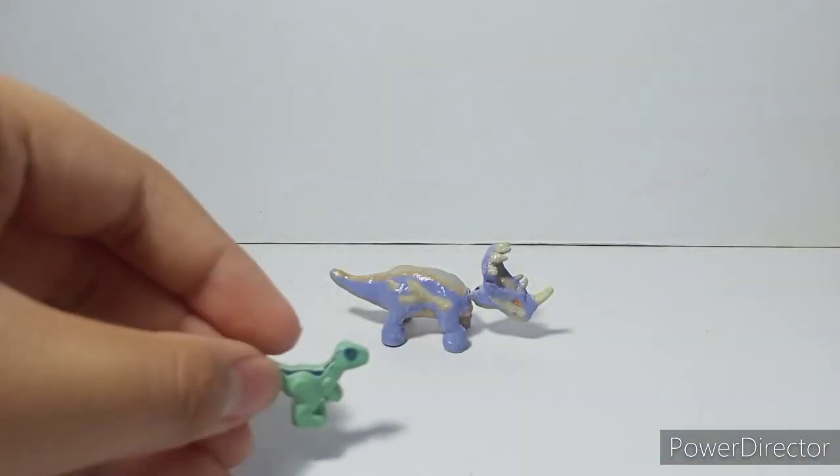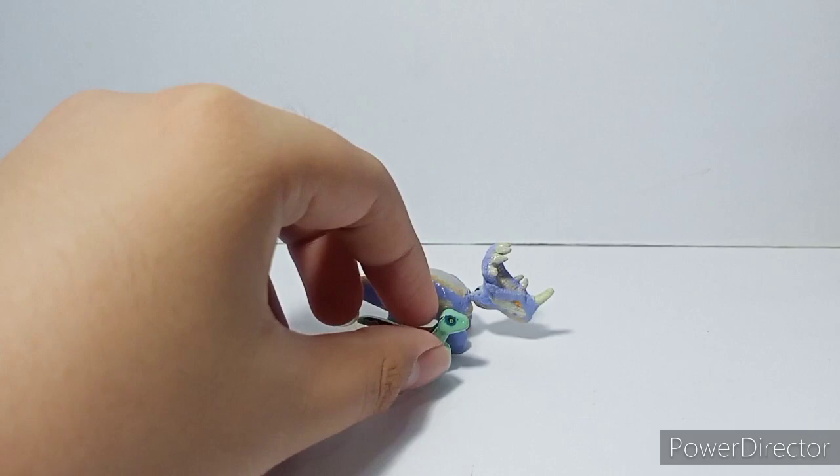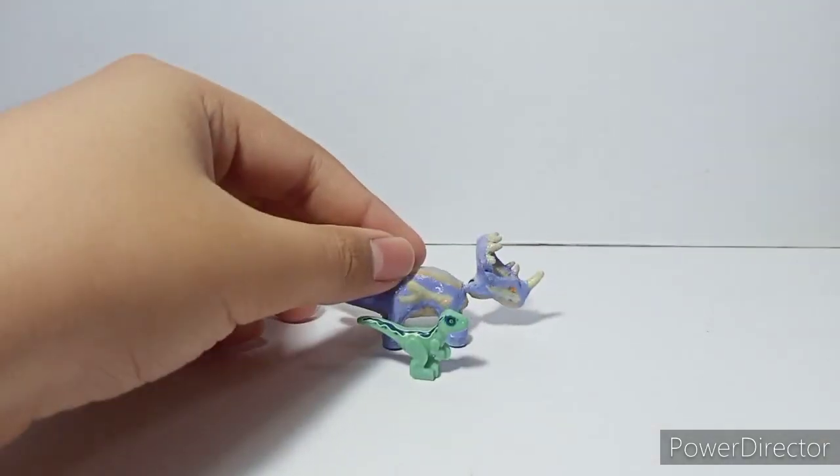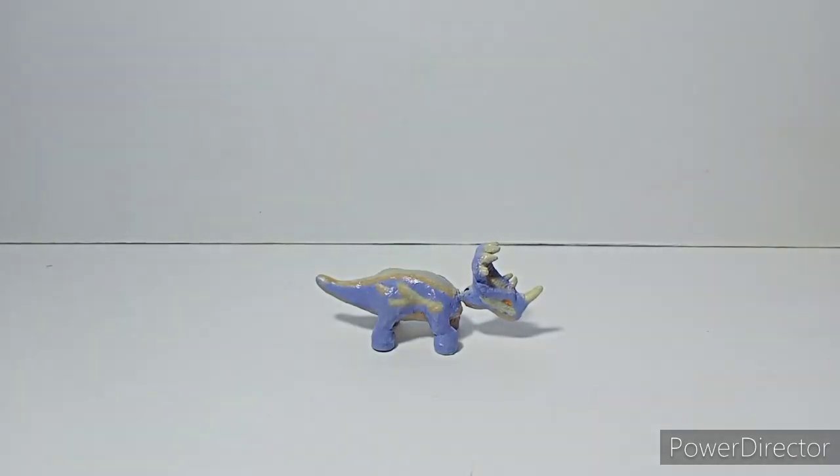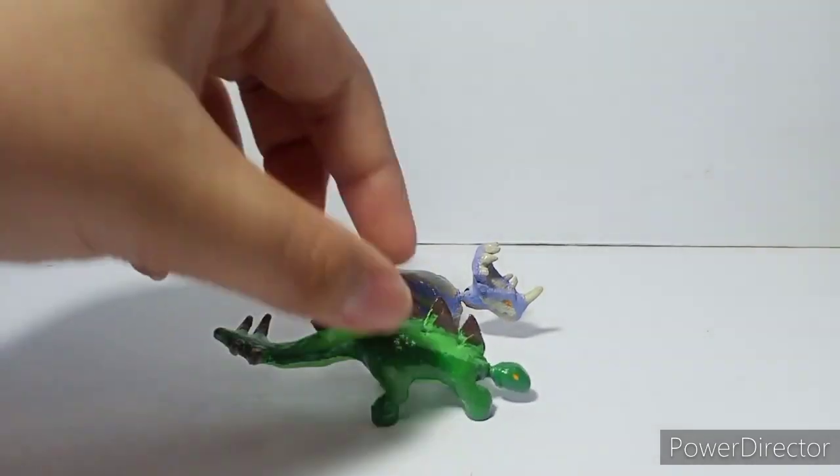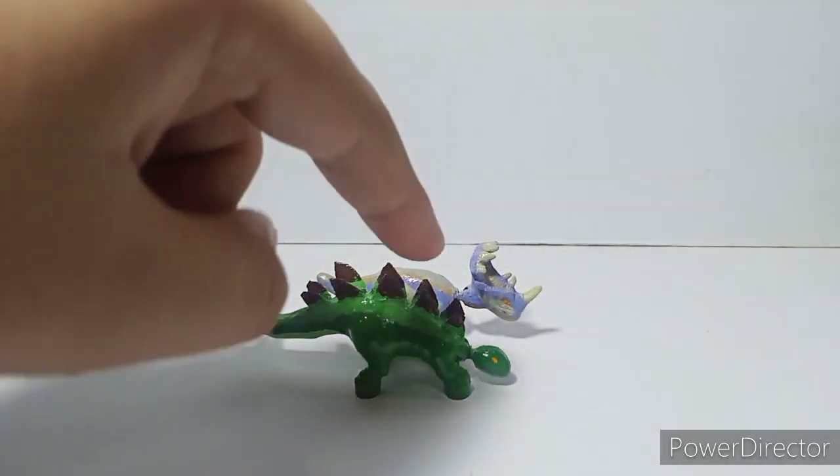Let's move on to our herbivores too. This is the Stegosaurus. The Stegosaurus is taller because of the plates and also longer because of its tail. Now let's move on to the mid-sized carnivores. Today we're going to be having Baryonyx Limbo.